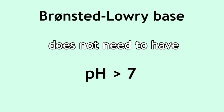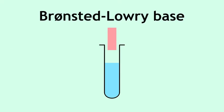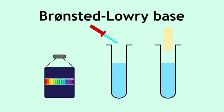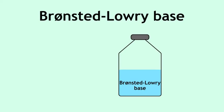So a base, according to the Bronsted-Lowry theory, does not need to have a pH greater than 7, or turn red litmus paper blue, or turn universal indicator solution or paper blue or purple. The only requirement is that it is able to accept protons.